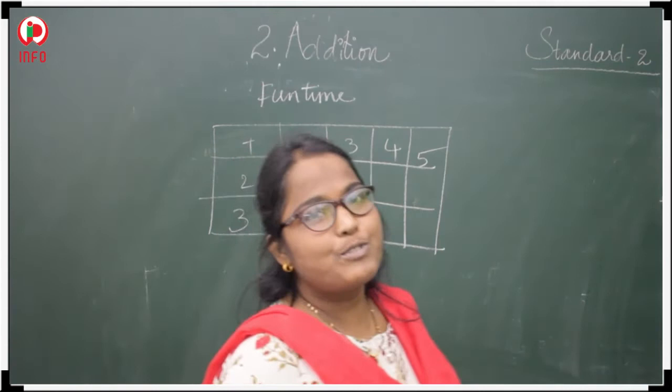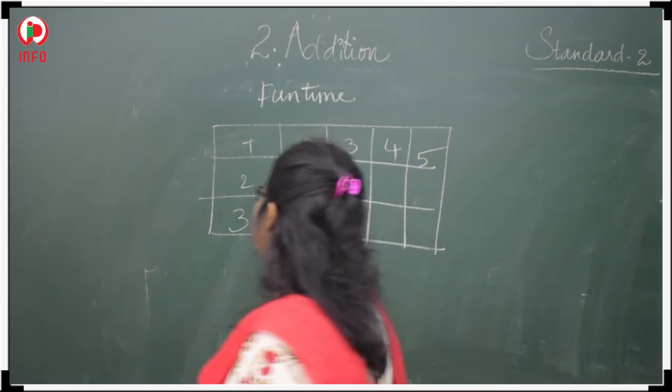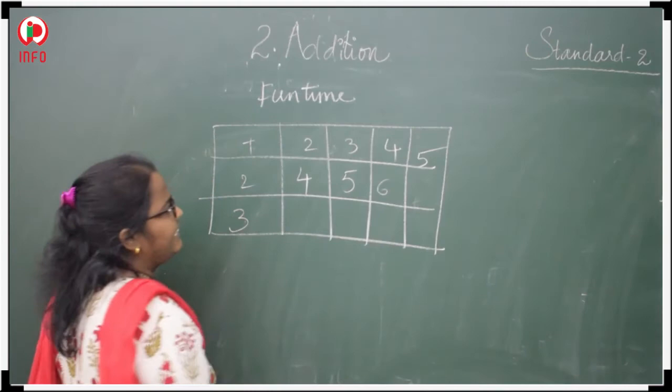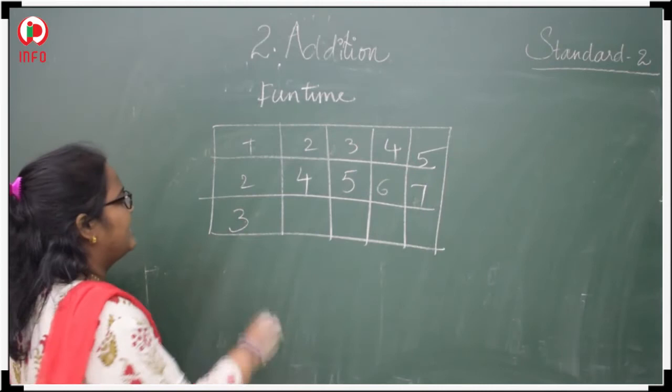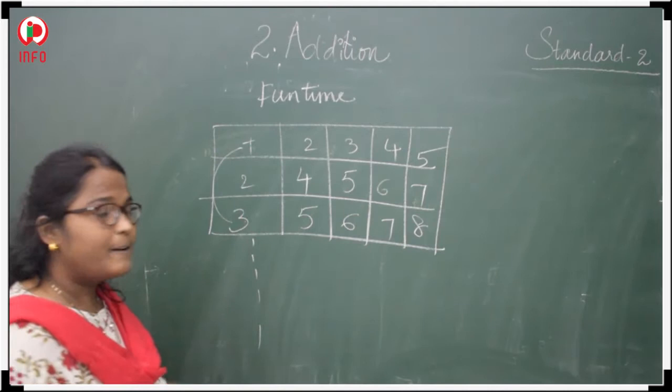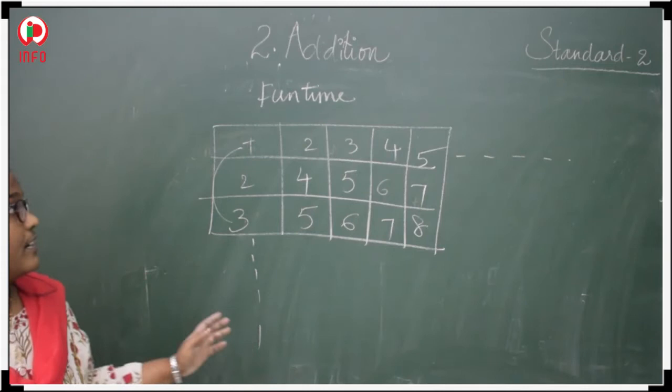Now we have a small fun time to complete the table. 2 plus 2 is 4, 2 plus 3 is 5, 2 plus 4 is 6, 2 plus 5 is 7. Next: 3 plus 2 is 5, 3 plus 3 is 6, 7. You can do with any number of times here and any number of times here. Hope you have understood this fun time to complete the table.